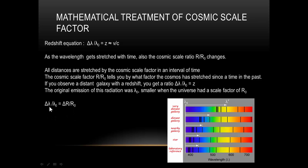So let's take this equation: delta lambda divided by lambda nought is also equal to the ratio by which the cosmic scale factor has changed compared to the original value, R nought.